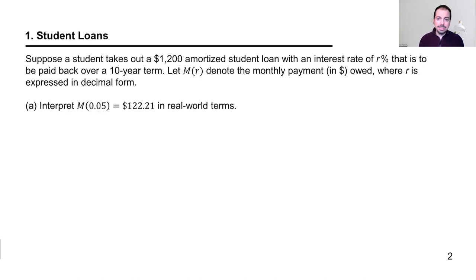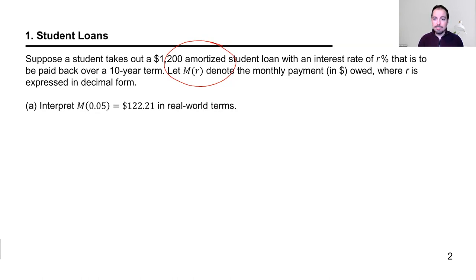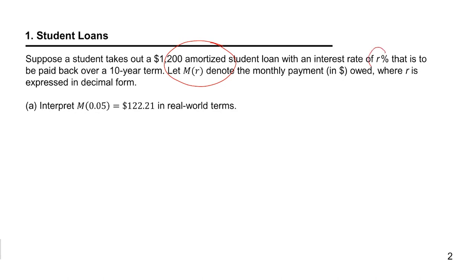Let's start with the first application: student loans. Suppose a student takes out a $1,200 amortized student loan. What does 'amortized' mean? This effectively means that the loan is accruing interest, and when you start making monthly payments, you're paying a portion of the original loan amount plus a portion of the interest.